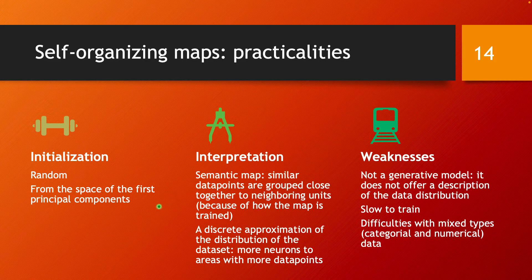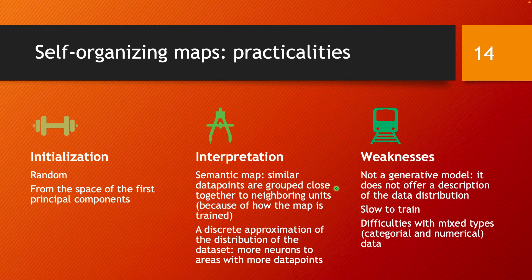Another important point is how to interpret a self-organizing map. One of its attractive features is that it offers a so-called semantic map — it gives meaning to your data points. Similar data points are grouped close together in neighboring units on the 2D grid, because vectors that are close in the original space have similar influences on the map during training.